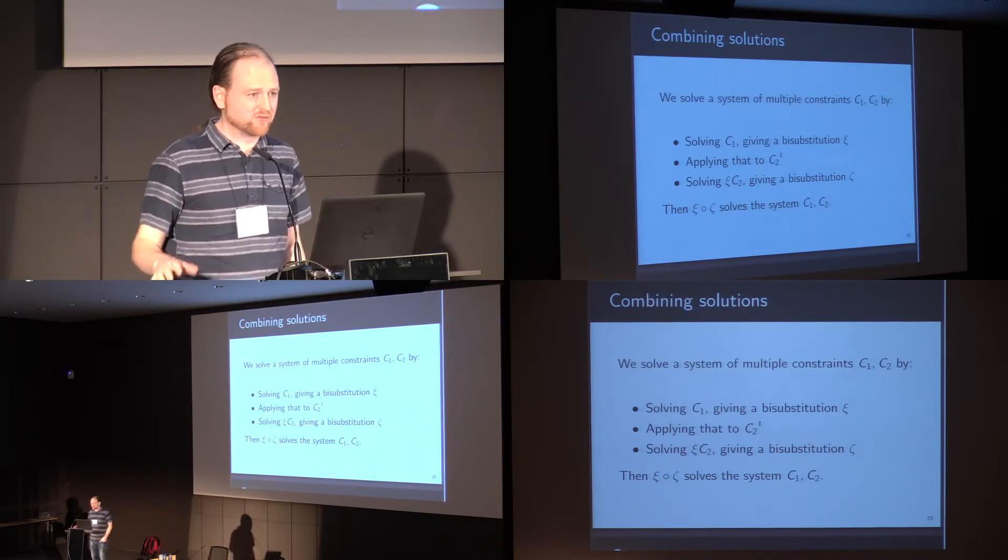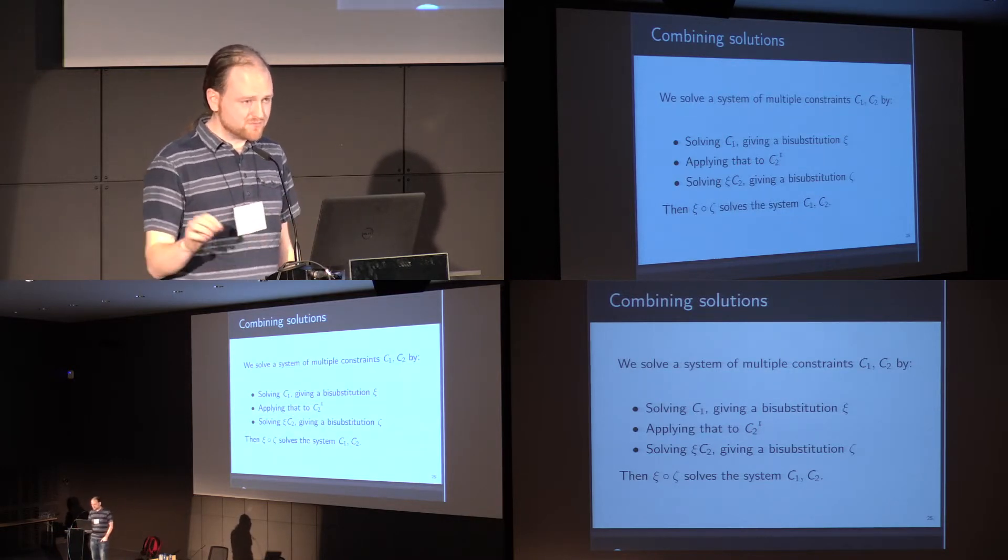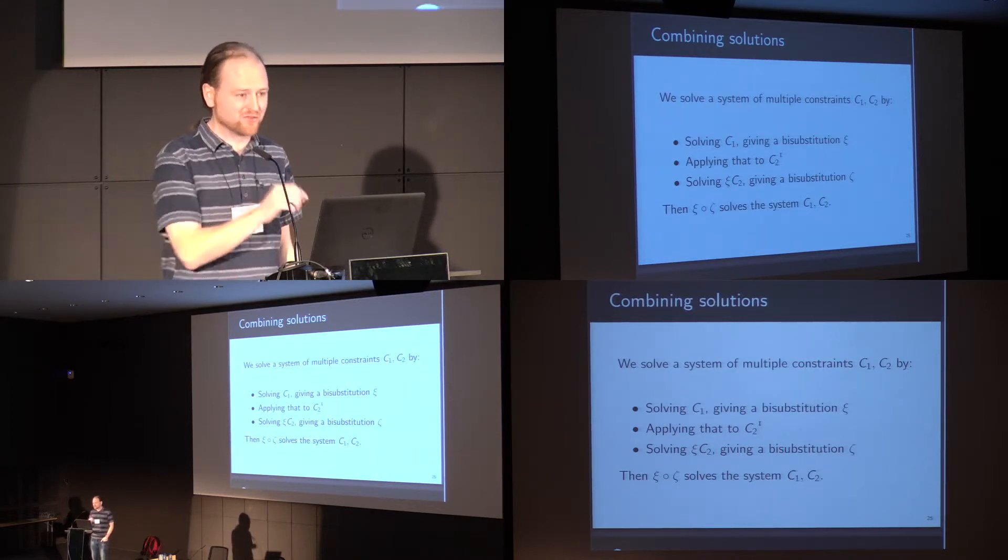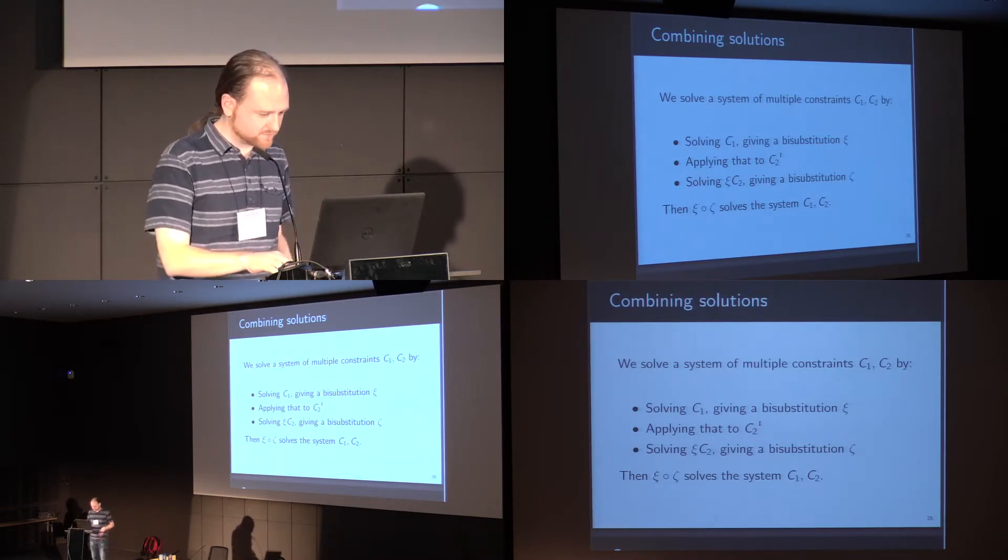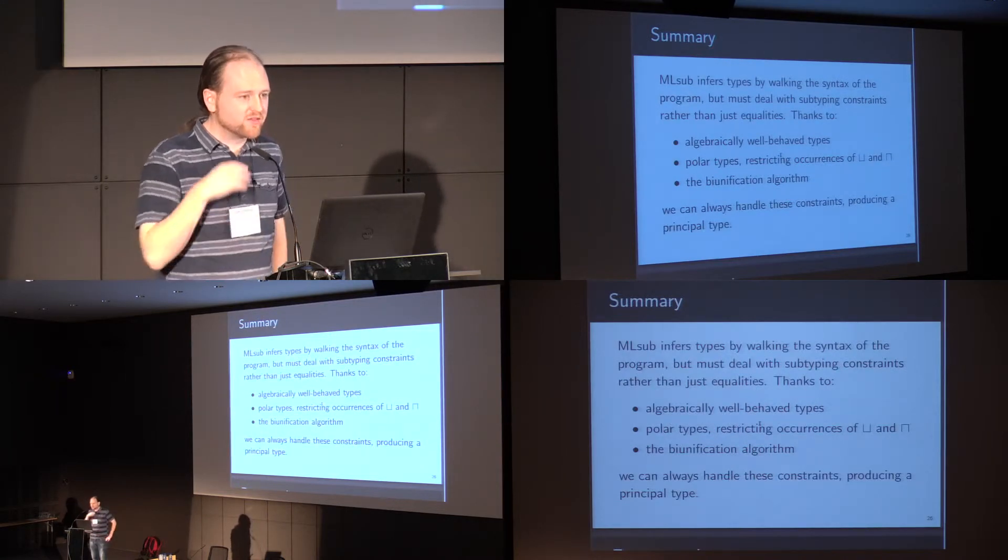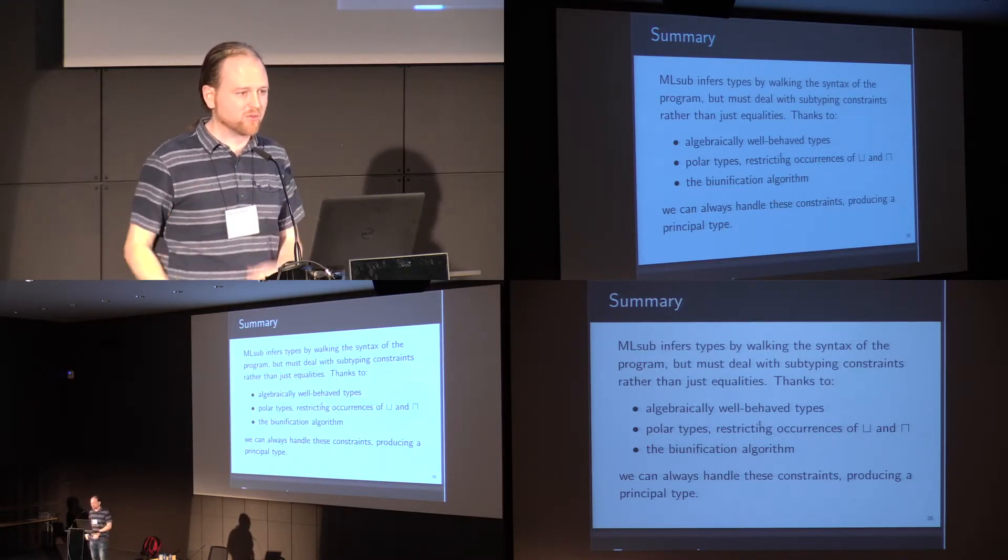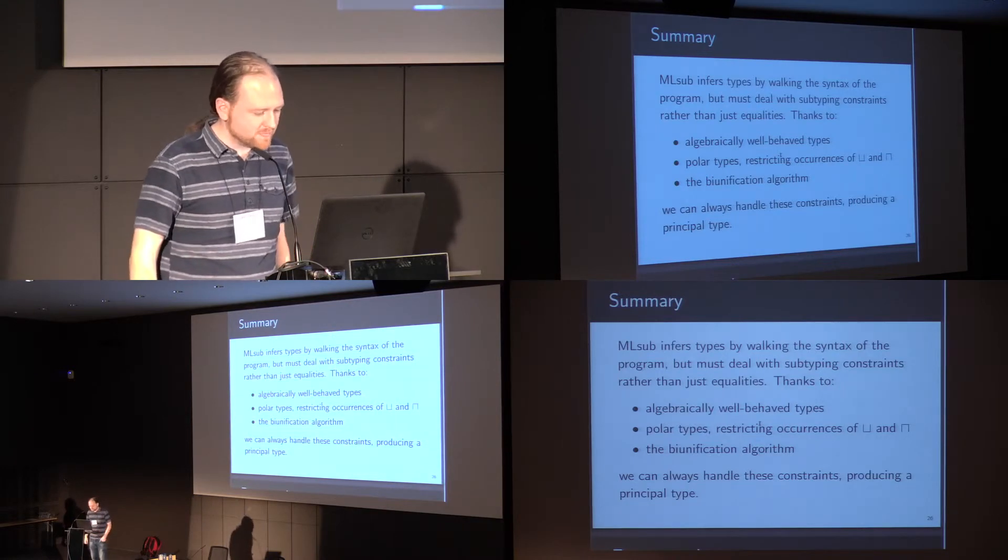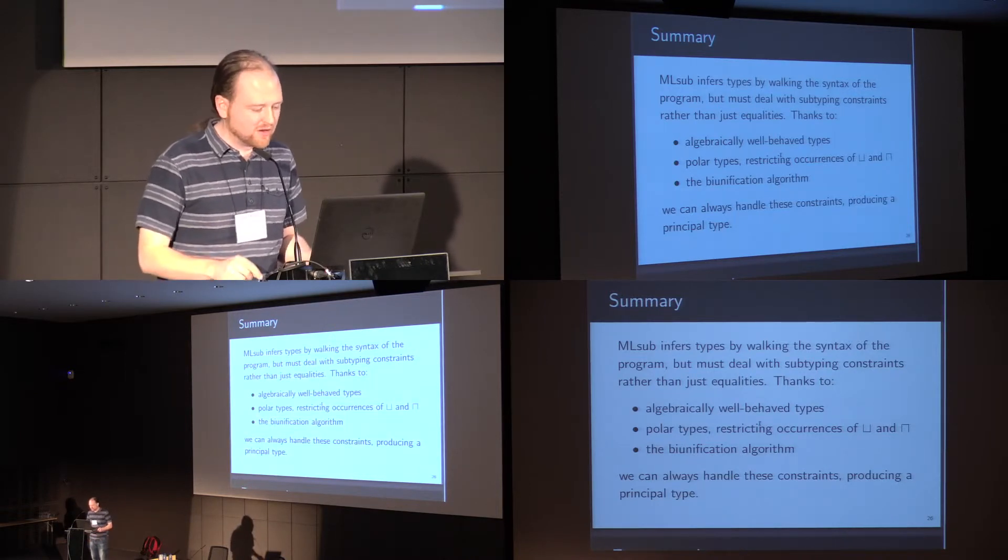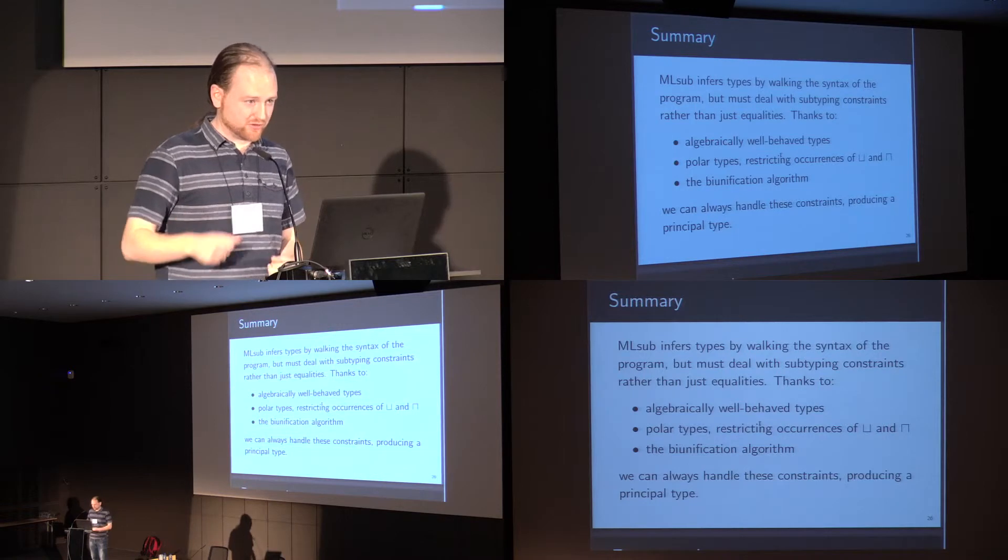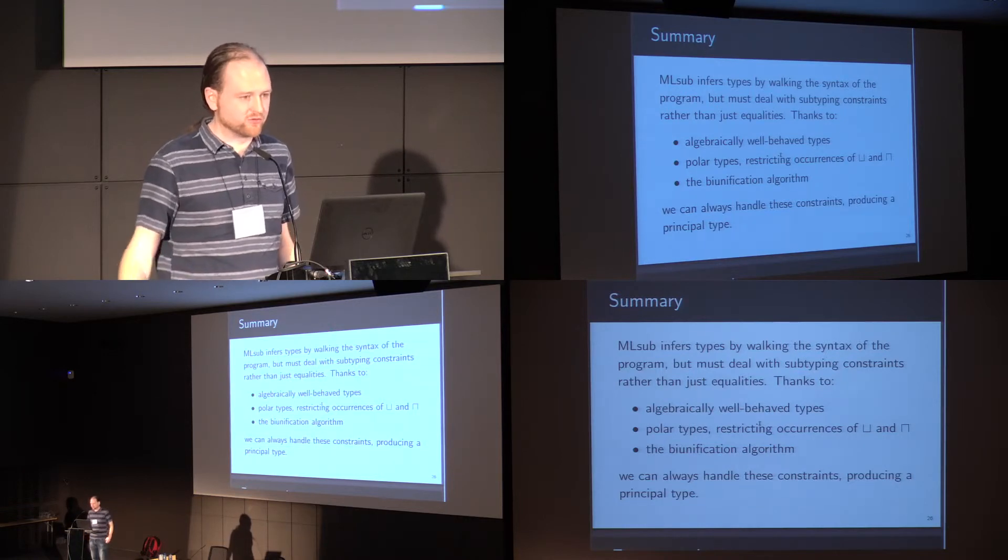In particular, if you write down this algorithm for bi-unification and you delete three or four lines or something to do with subtyping, the ones that mention meet and joins, what you get is exactly Martelli and Montanari's unification algorithm. So the type inference algorithm for ML-sub works more or less the same as ML. It walks the syntax tree of the program, building a principal type at each node. But because of the more well-behaved lattice of types that we've constructed, and because the polar types restrict where the difficult constructors of upper-bound and lower-bound can occur, then the bi-unification algorithm can always handle these constraints and produces a principal type.